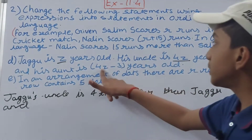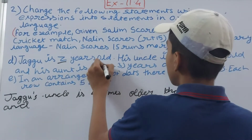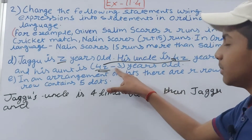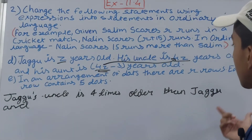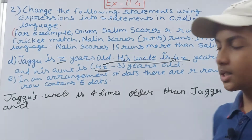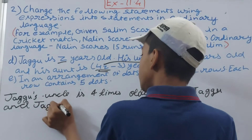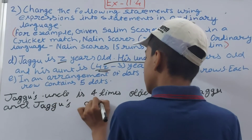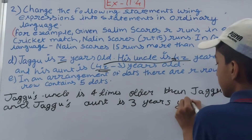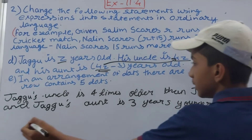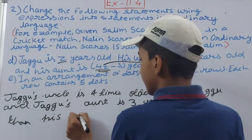For Jagu's aunt: the expression is 4z minus 3. Here 4z is Jagu's uncle's age, and minus 3 means 3 years less than that. So we can say Jagu's aunt is 3 years younger than his uncle. We write: Jagu's aunt is 3 years younger than his uncle.